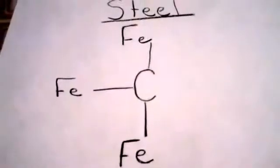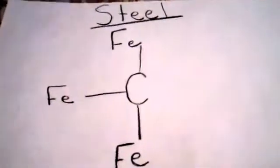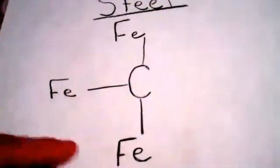Steel can be made in a factory. It's very simple. One carbon, three irons around it.